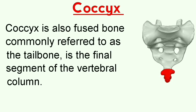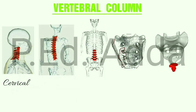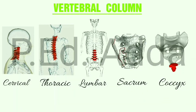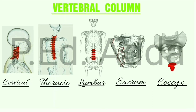The coccyx is also a fused bone, commonly referred to as the tail bone. It is the final segment of the vertebral column, as you can see marked with red color in the figure below. It is very small after the fusion of the bones. This completes the first part of the skeletal system — the axial skeleton. If you have any doubts or queries, leave a message in the comment section and I will definitely solve your problem.